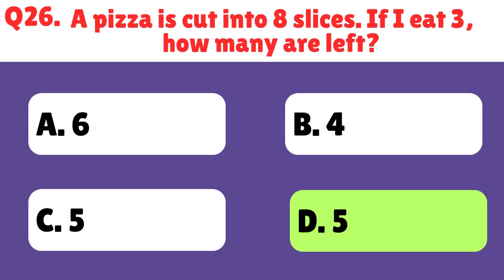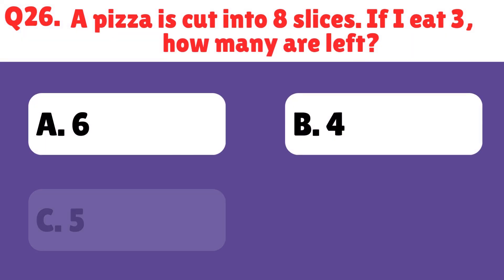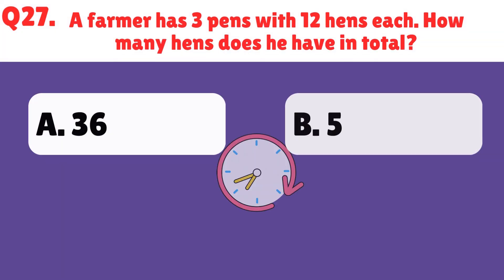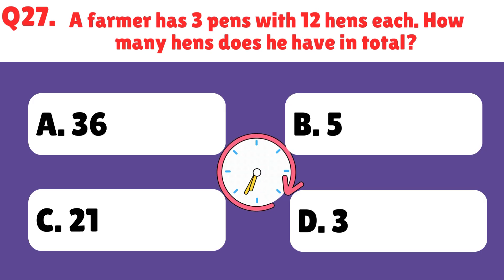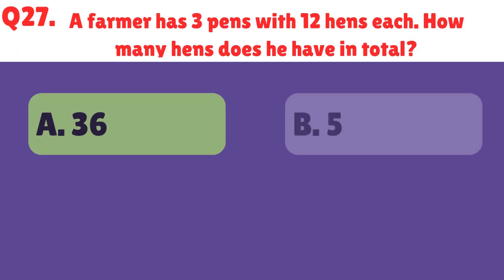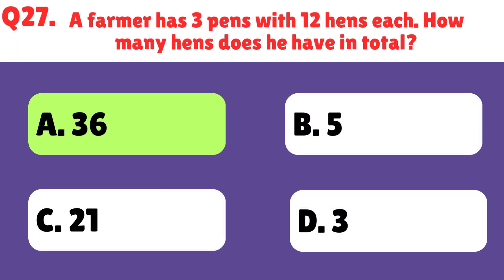A pizza is cut into 8 slices. If I eat 3, how many are left? The right answer is 5. A farmer has 3 pens with 12 hens each. How many hens does he have in total? The right answer is 36.